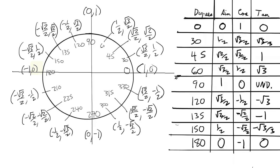Moving on to cosine. The cosine of 0 degrees is 1, the cosine of 30 degrees is √3 over 2, the cosine of 45 degrees is √2 over 2, the cosine of 60 degrees is 1/2, and the cosine of 90 degrees is 0.